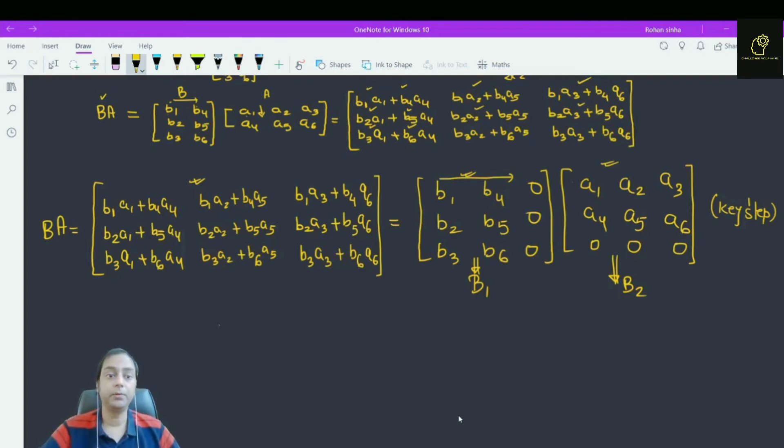B1 A1 plus B4 A4. Second row, this is second row, first column. Take second row: B2 A1, B5 A4.